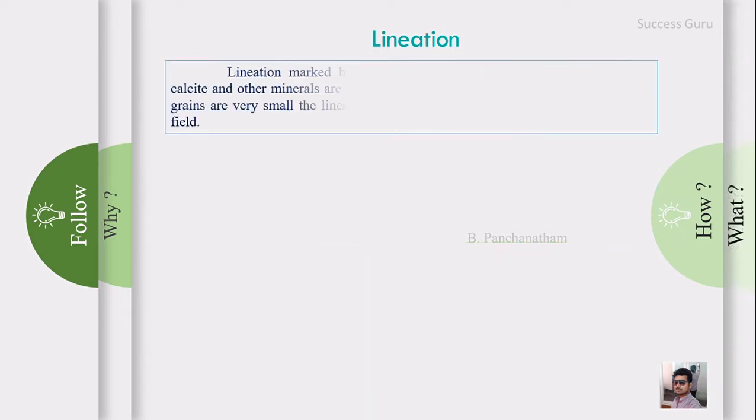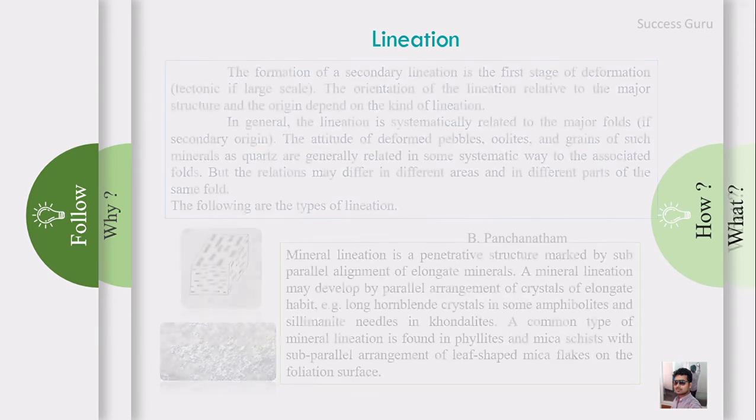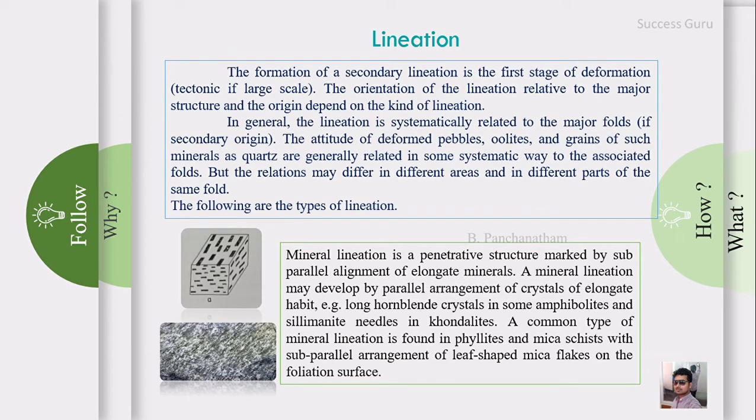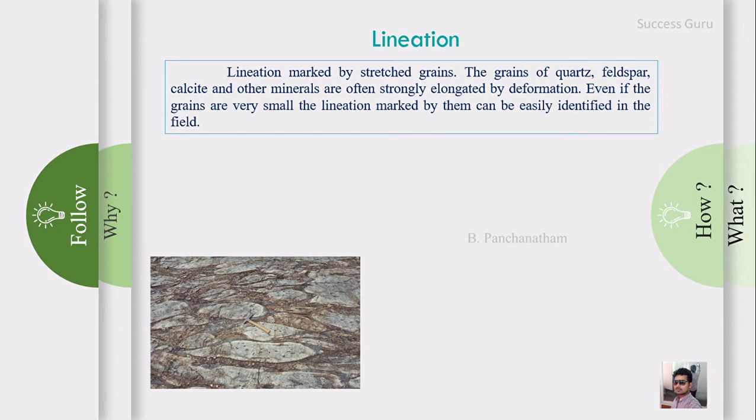The second type is lineation marked by stretched grains. This is probably the second stage of deformation due to external stress. Grains like quartz, feldspar, calcite, and similar minerals tend to stretch, and that stretching shows a preferred oriented direction. In the first stage, with less pressure, needle-like minerals tend to align. In the second stage, even minerals without any proper shape will try to deform, that is, elongate and show preferred orientation.